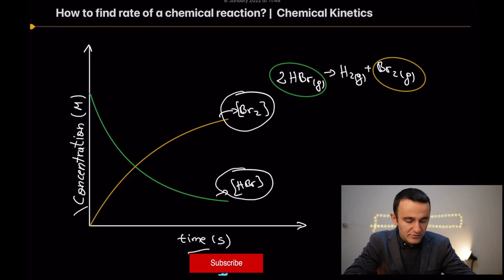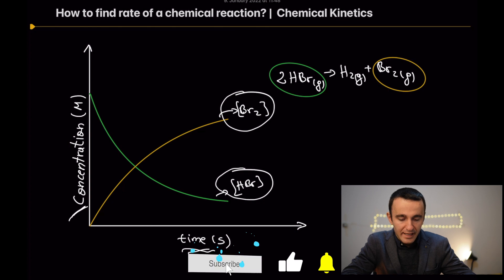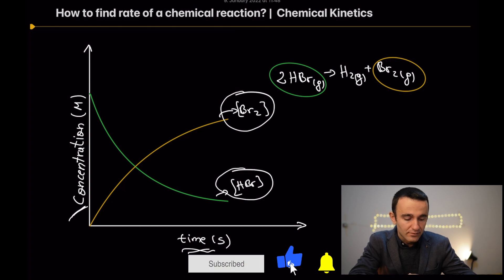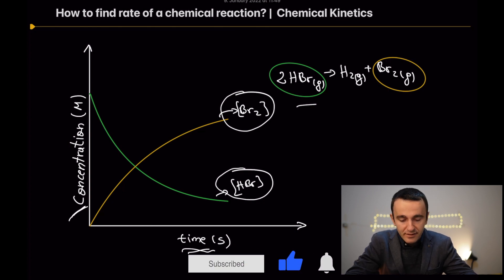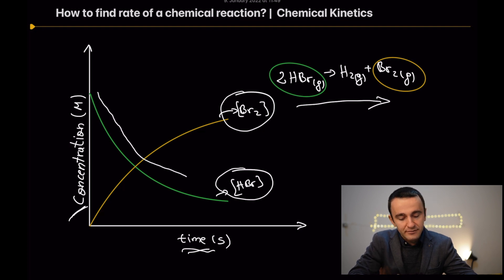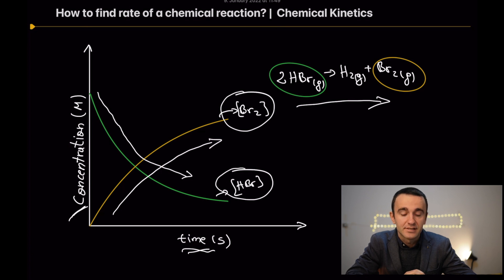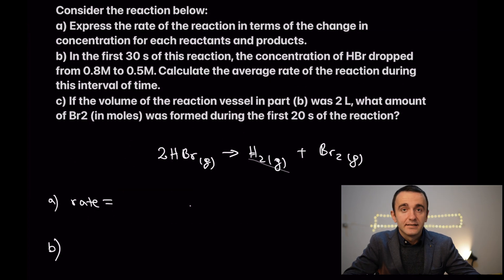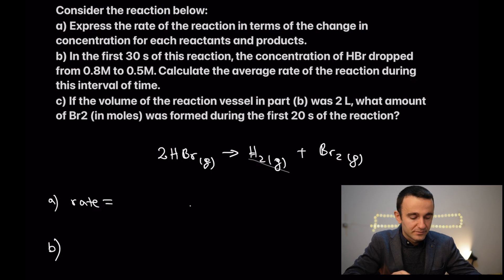We have concentration over time. As you can see, as the reaction proceeds, the concentration of the reactants decreases and the concentration of the products increases over time. Let's take a look at this example to fully understand the rate of a chemical reaction.